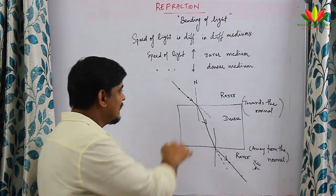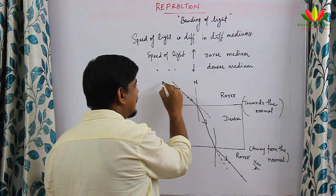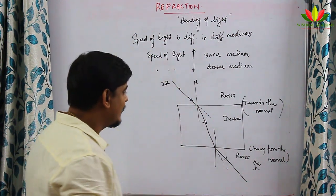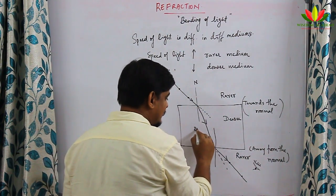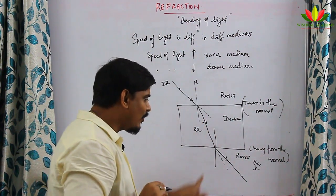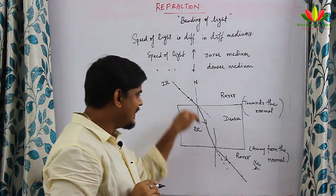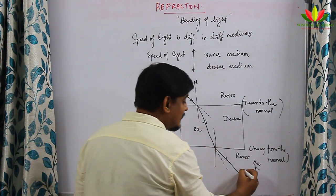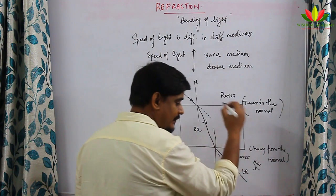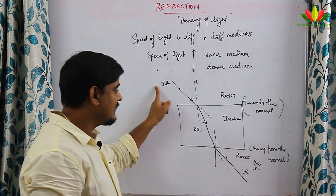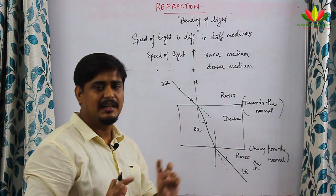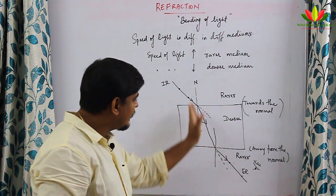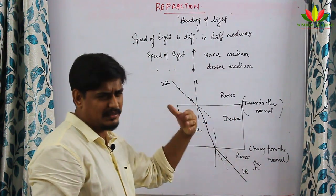This ray is known as the incident ray and this ray is known as the refracted ray. For the second surface you can call it incident ray and refracted ray, or you can call the final ray the emergent ray. So the terms are: incident ray, refracted ray, and emergent ray.